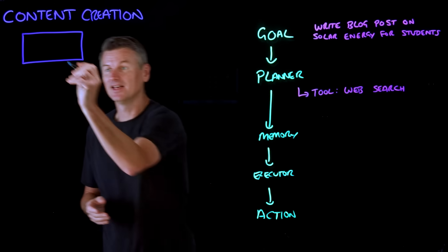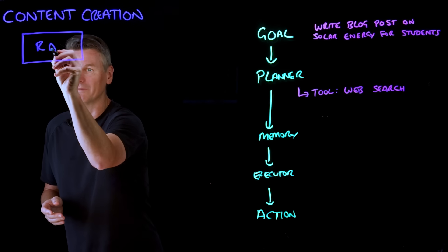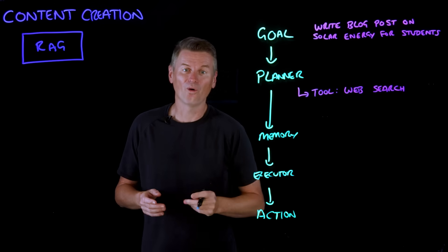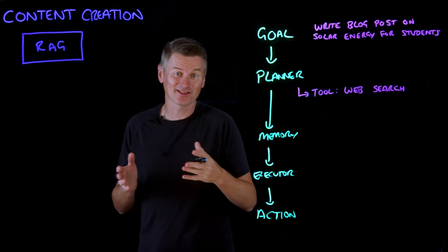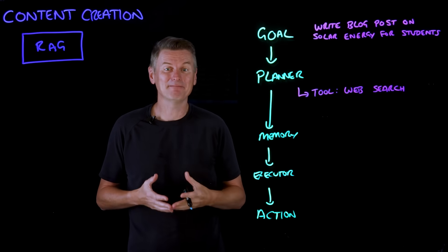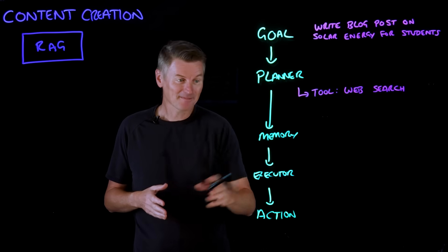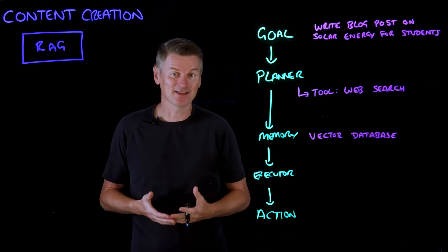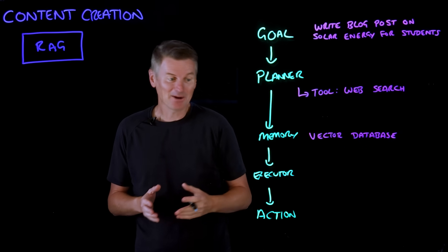And this is where retrieval augmented generation or RAG comes in. The agent splits these documents into chunks, and those chunks get embedded into a vector database, which becomes the agent's memory for this specific task.